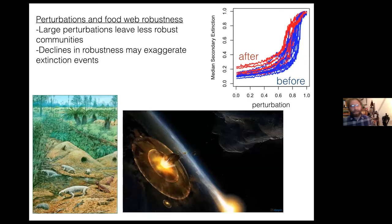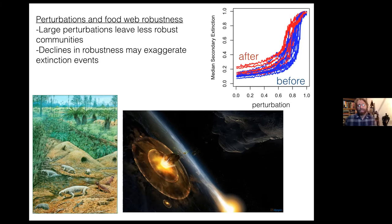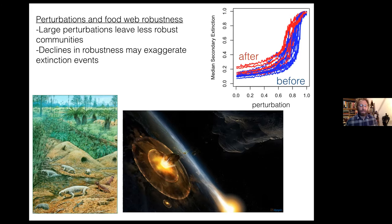The messages here are that large perturbations appear to have left less robust communities, and that declines in robustness may exaggerate extinction events. It appears the Triassic system took some time to recover and was less robust immediately following the Permo-Triassic. It's also very possible that the end-Cretaceous restructuring set the stage for the effects of the asteroid when it hit 66 million years ago, signaling the end of non-avian dinosaurs.